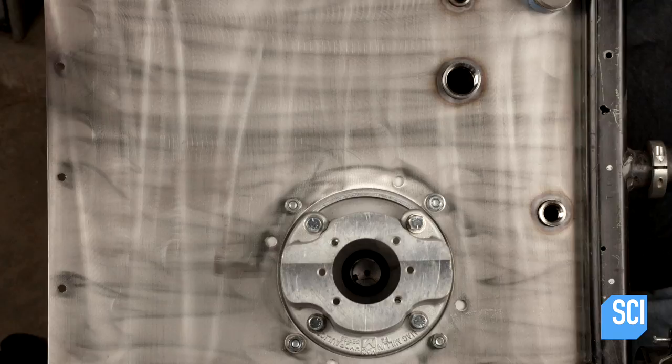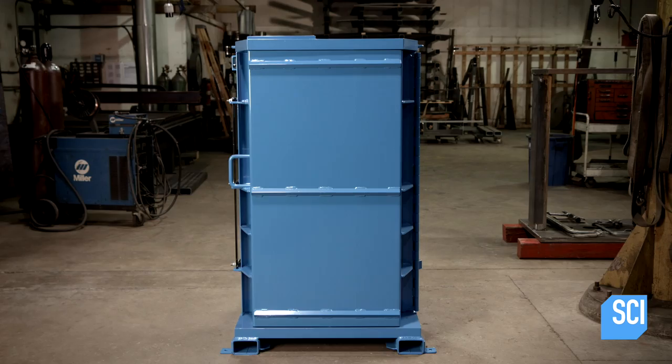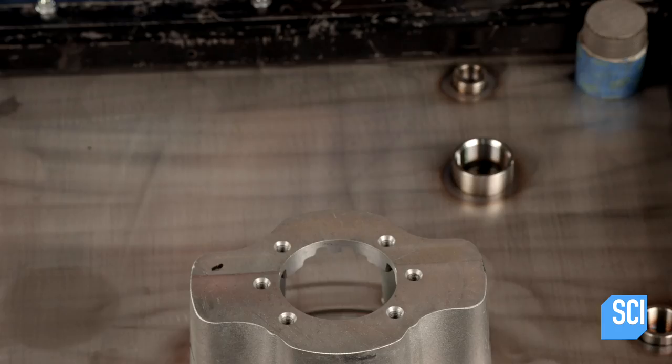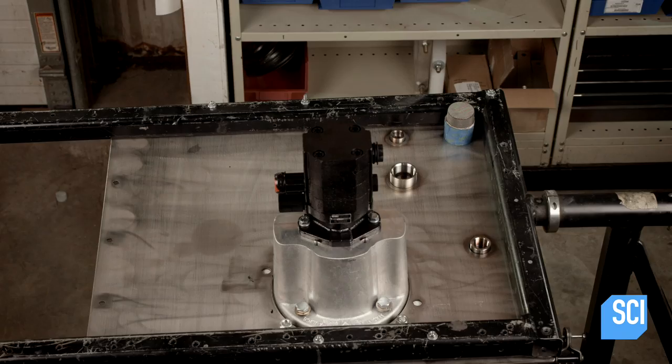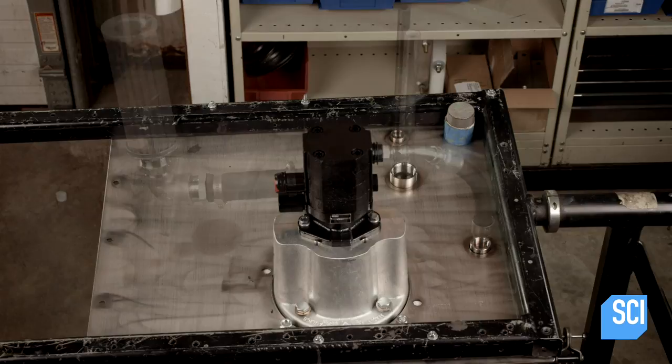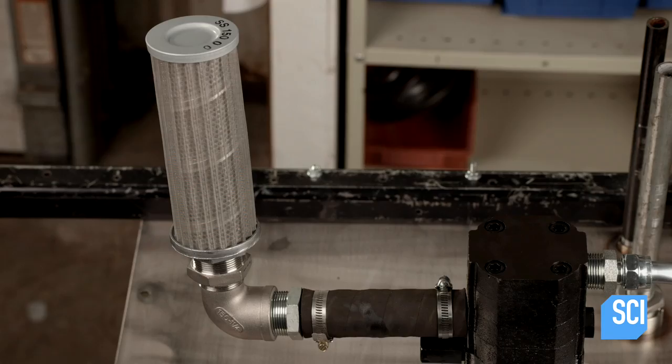Workers now assemble the crusher's hydraulic power unit. After bolting a pump motor to the lid, the team flips it over. They insert a hydraulic pump into its housing on the lid's underside. They plumb the pump and attach a suction strainer to filter contaminants from the hydraulic oil.